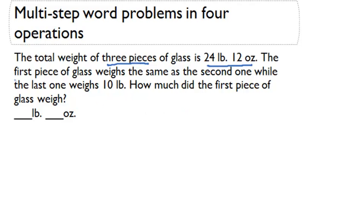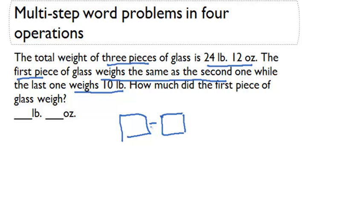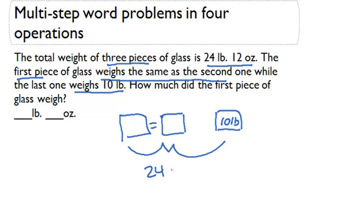The first piece weighs the same as the second, and the third weighs 10 pounds. So we have these three pieces of glass and these two are equal to each other, and then we have another that weighs 10 pounds. All of this together is going to weigh 24 pounds and 12 ounces.